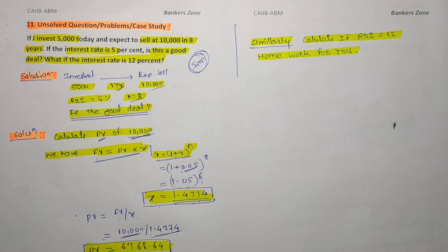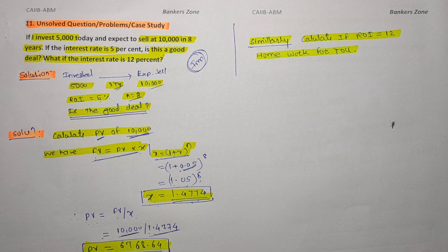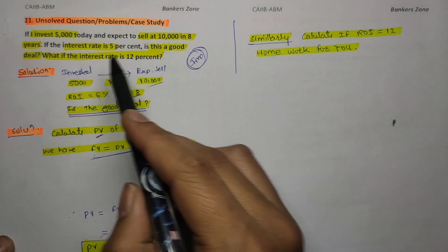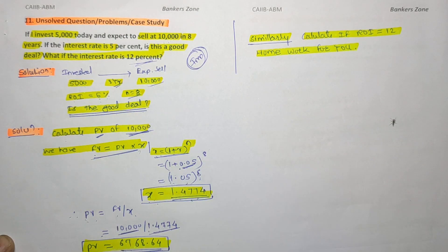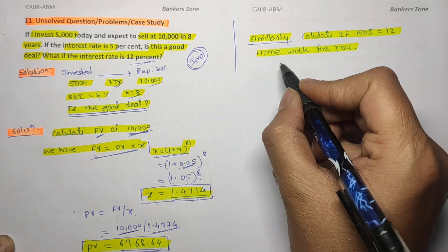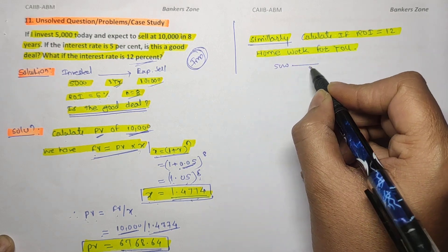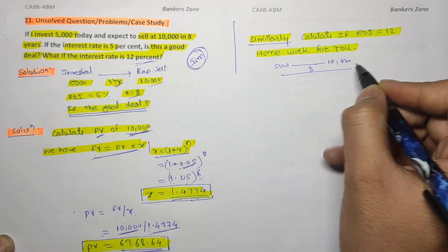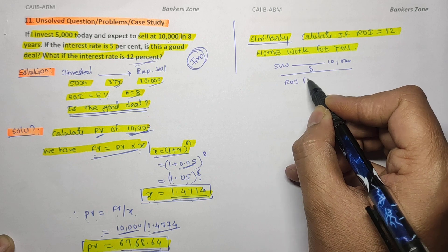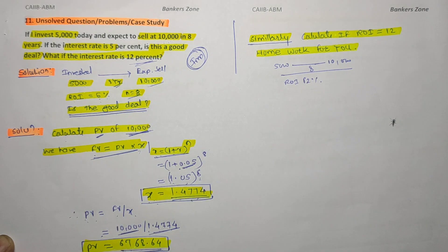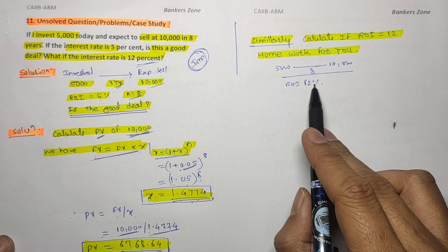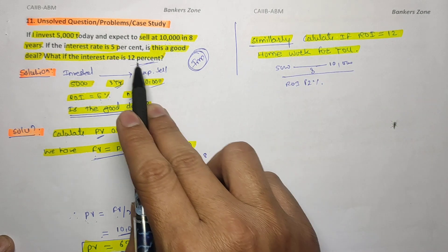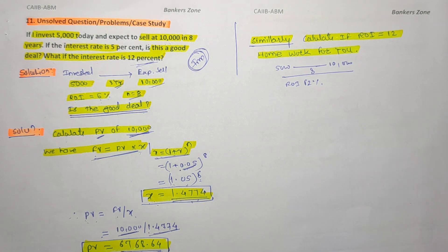In this fashion you solve whether an investment is good or bad — calculate the present value. Similarly, what if the rate of interest is 12 percent? You have to repeat all calculations: 5000 rupees invested, 10,000 after eight years, but now using 12 percent instead of five percent. This is homework for you — solve and comment your answer in the comment box.